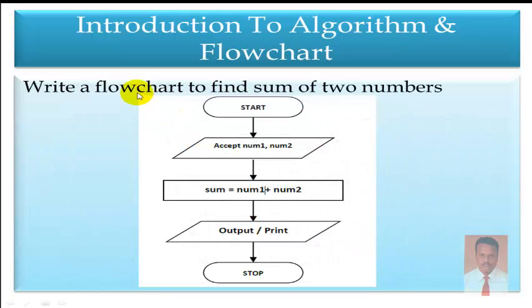Now we are going to draw a flowchart to find the sum of two numbers. Step 1: Start. Step 2: Input Num1 and Num2. Step 3: Sum = Num1 + Num2. Step 4: Print the Sum. Step 5: Stop.